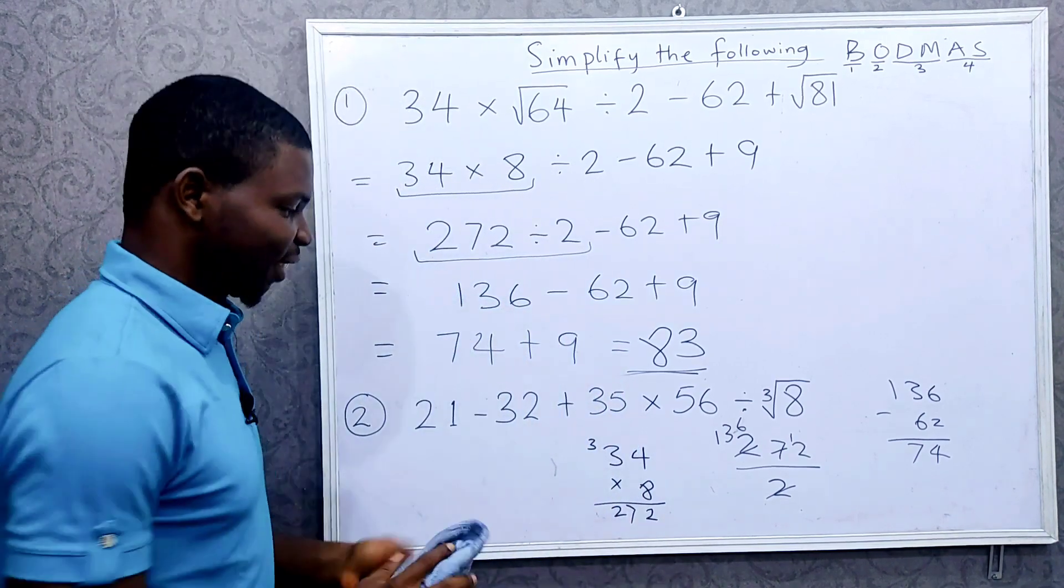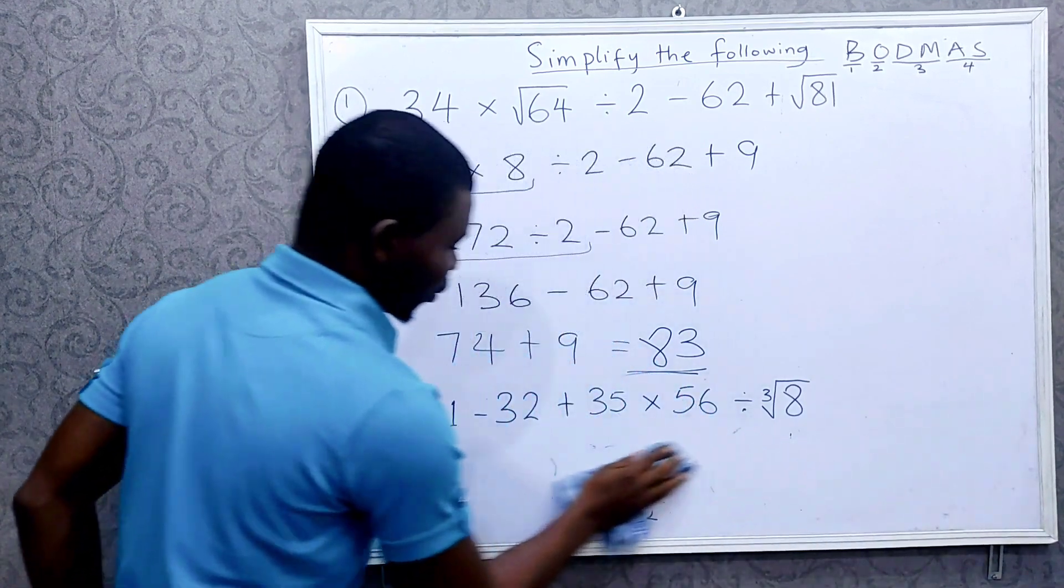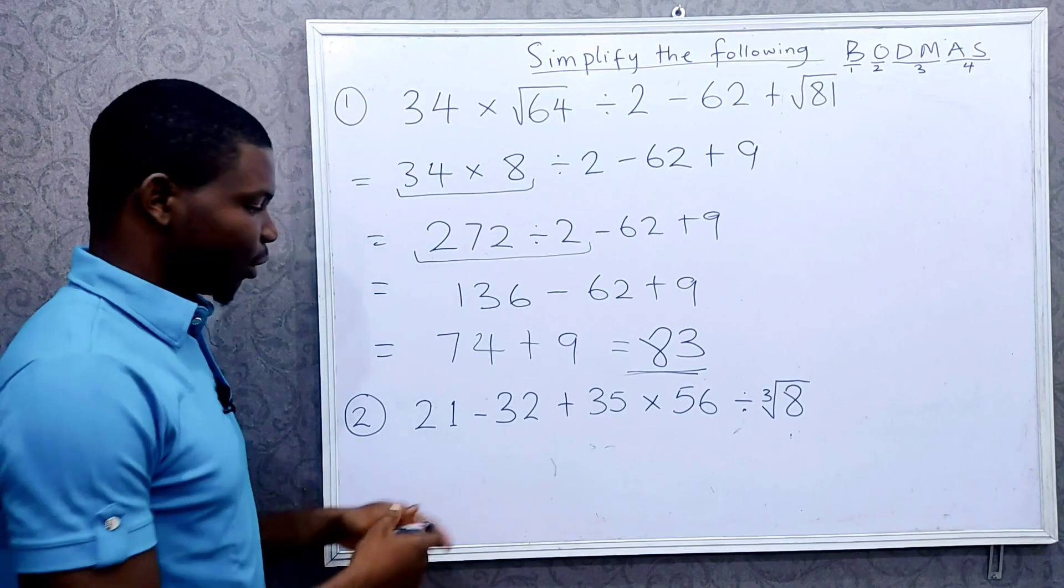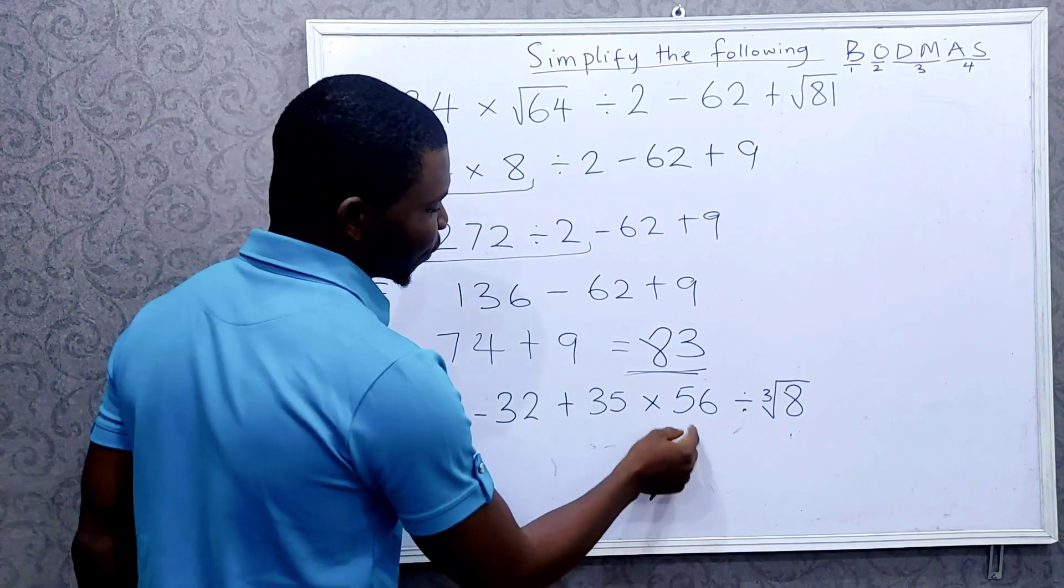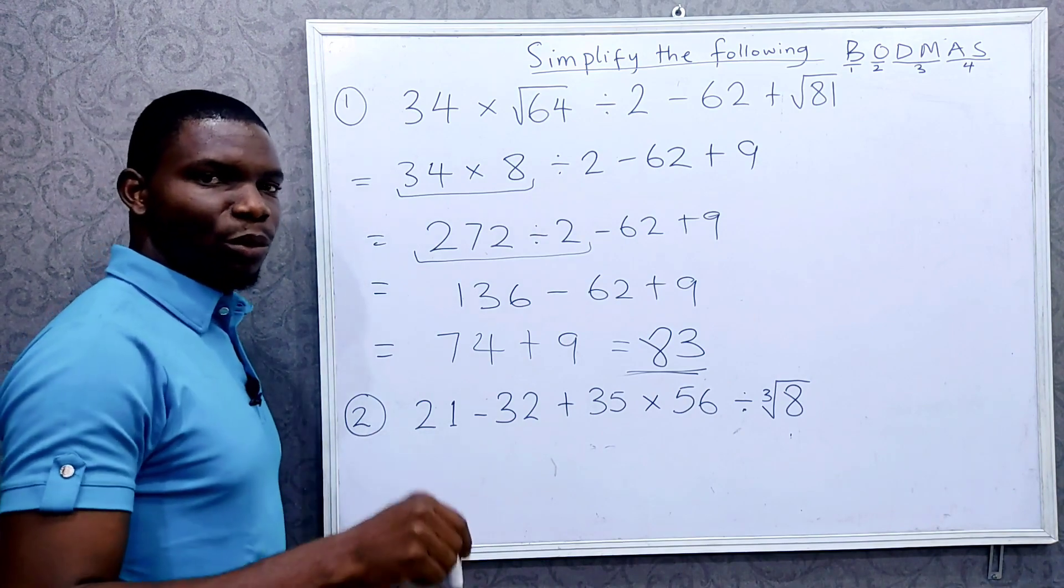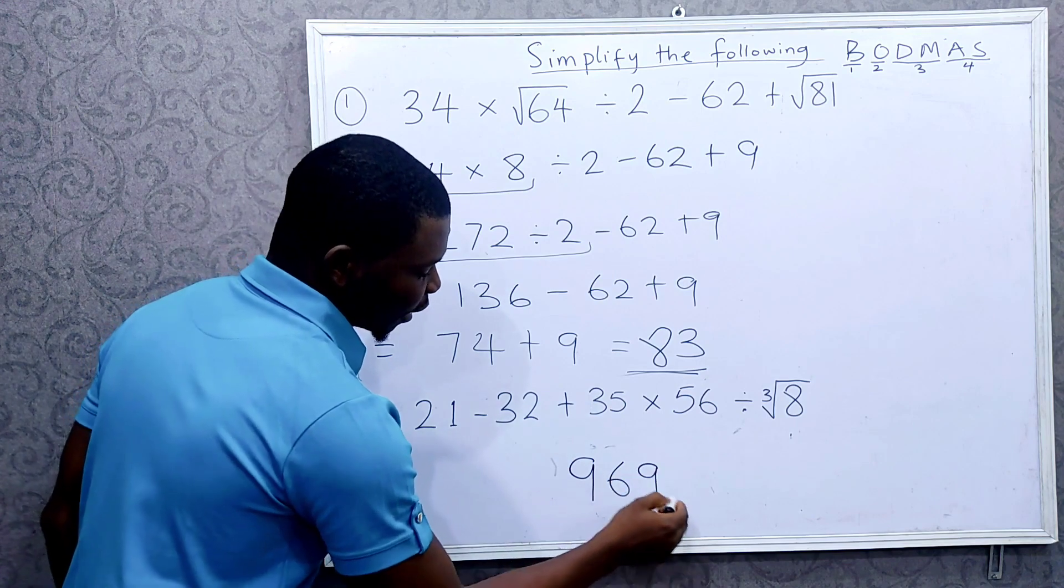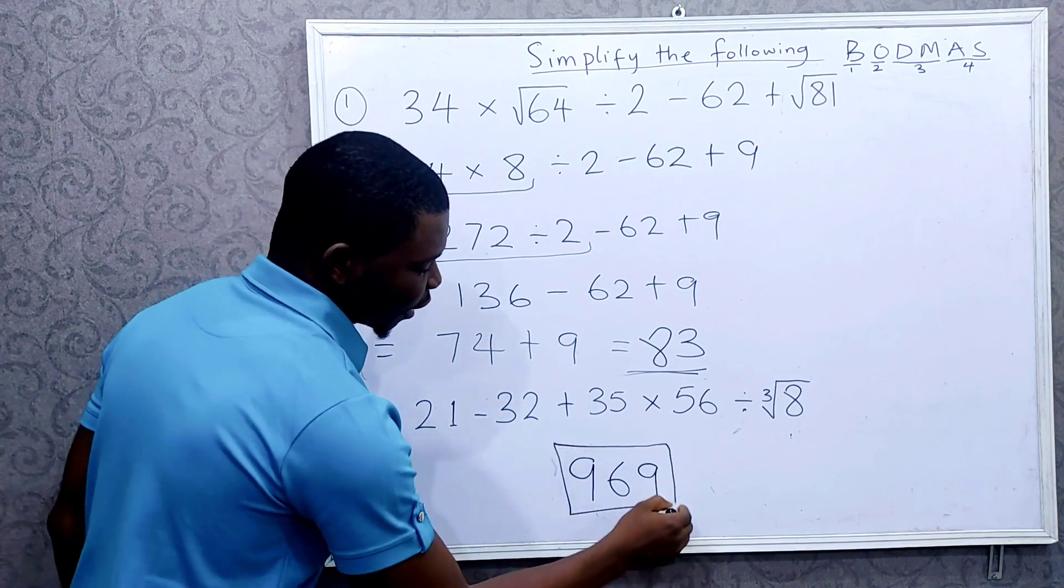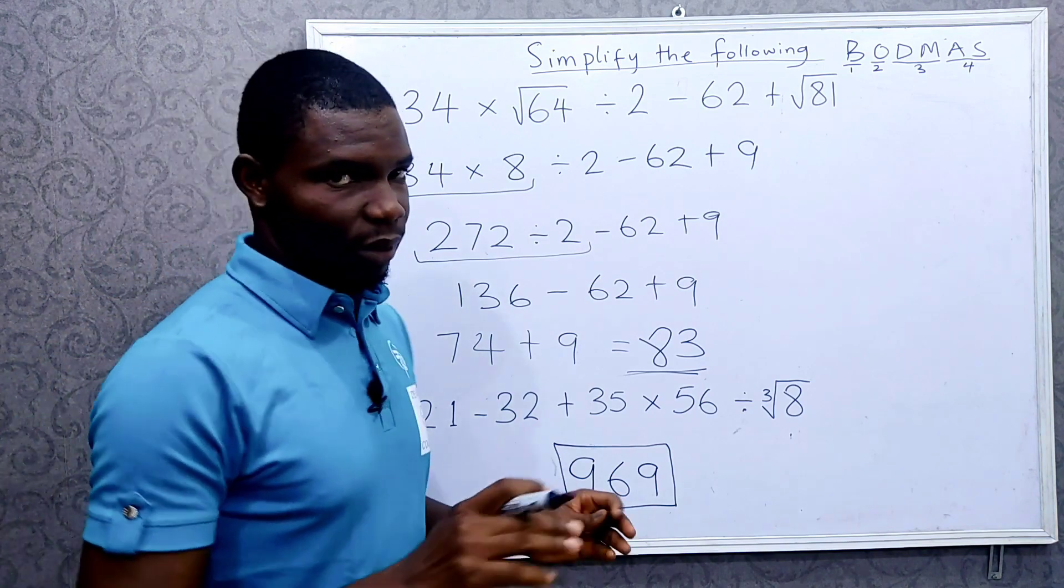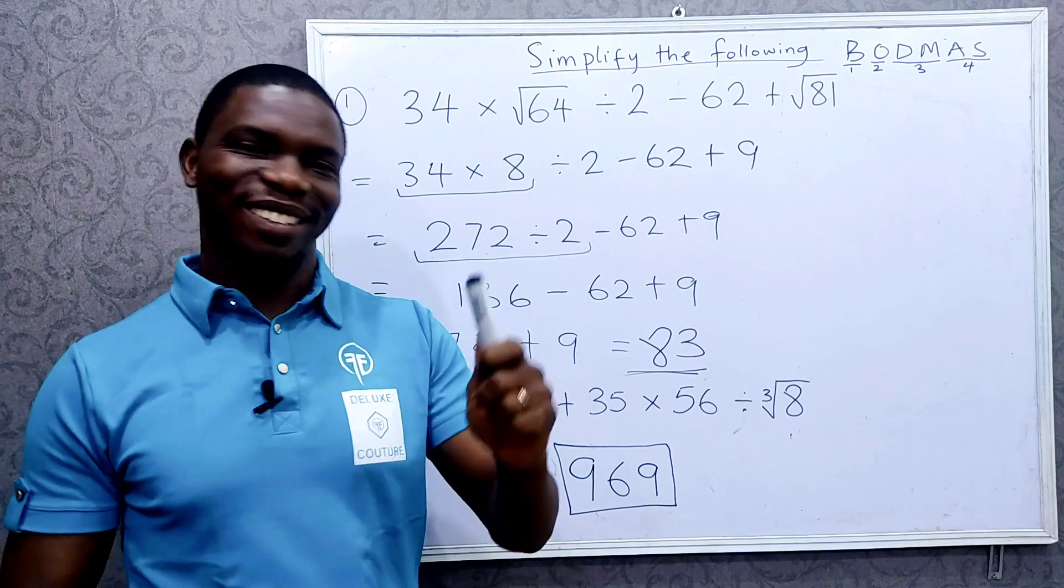And now it's your turn. You thought I was going to solve this for you, right? You're going to do this last one for me: 21 minus 32 plus 35 times 56 divided by the cube root of 8. Tell me what you get in the comments, or let me tell you what you should get: 969. So if you didn't get 969, check again, check your working, see where you made any mistake. All right, see you in the next one. Bye.